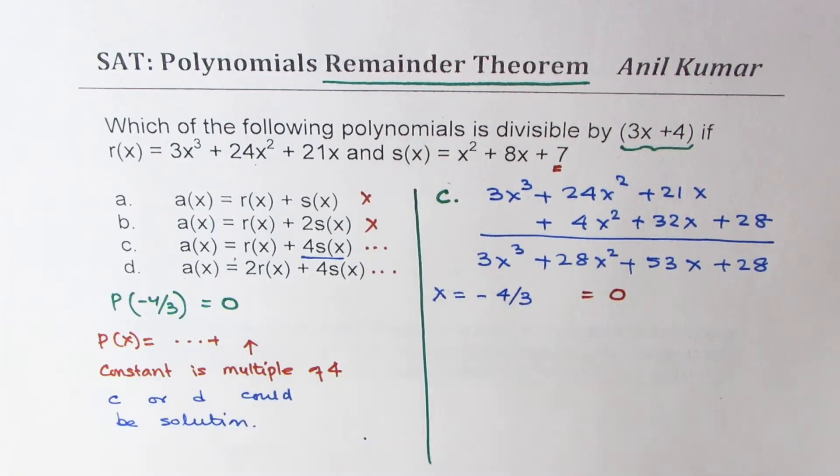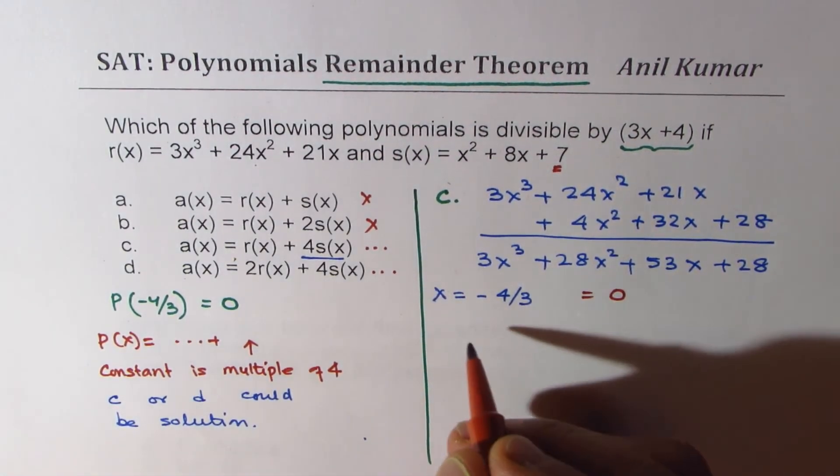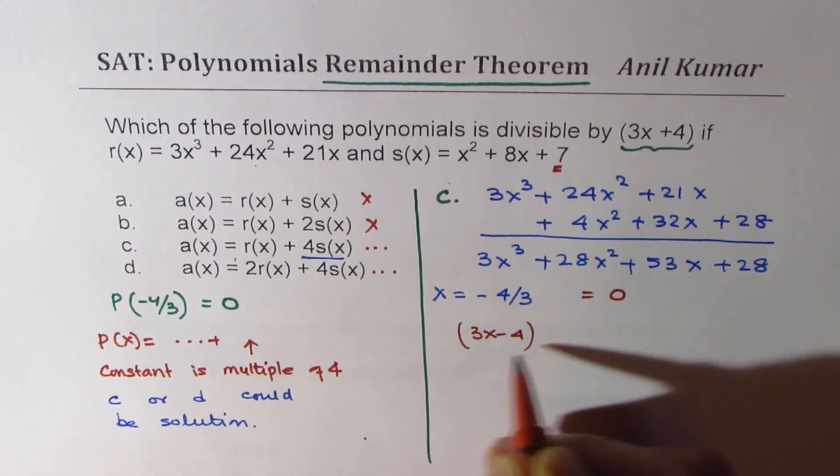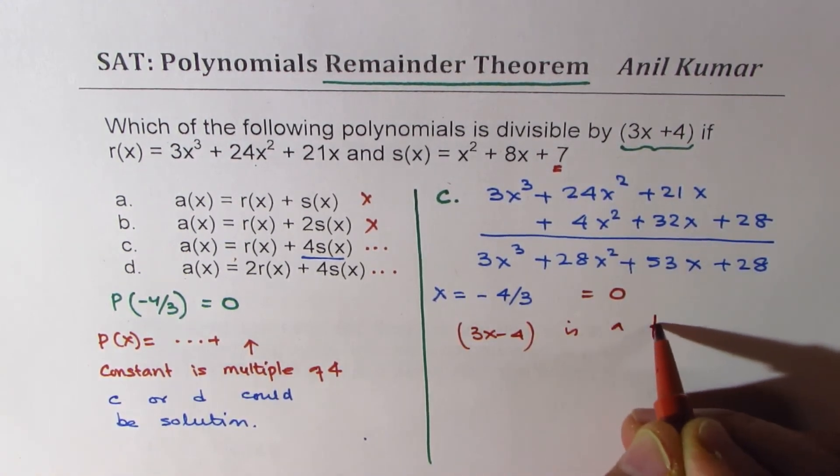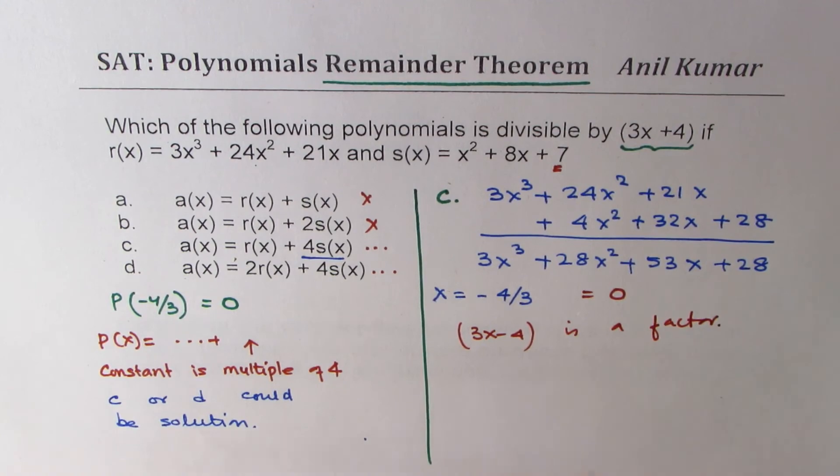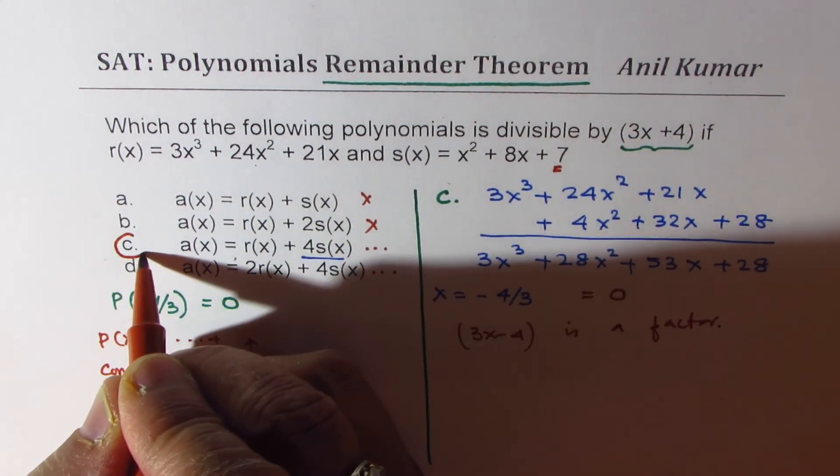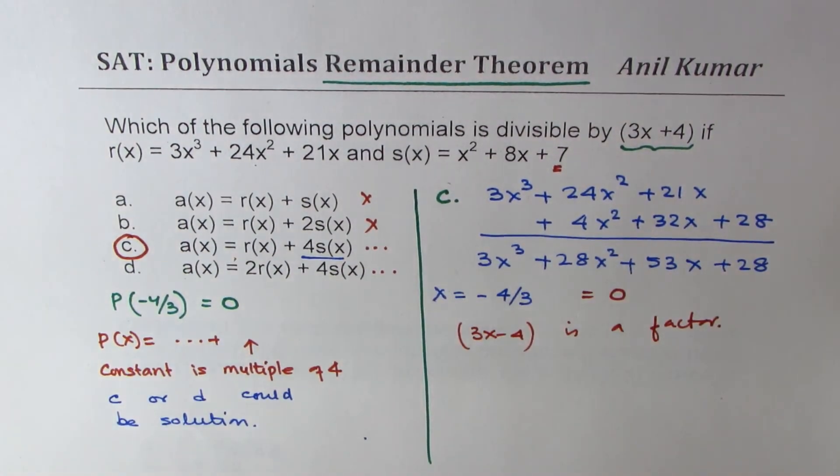Since this value is 0, we know that 3x minus 4 is a factor and therefore c is the right option. Do you see that part? So if you do like this, you can solve this question in minimum time.